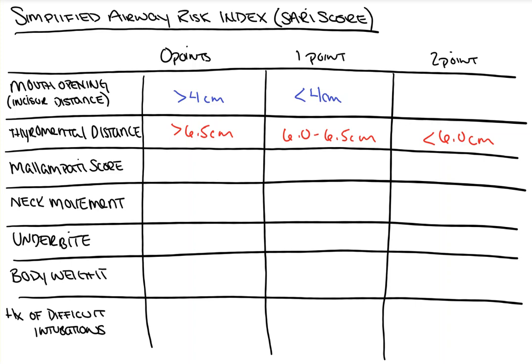Greater than 3 finger-breadths is good, 1 finger-breadth is bad, and 2 is so-so. Next is the Mallampati score. We won't review it here — please see the Mallampati score video for a refresher — but a score of 1 or 2 is worth 0 points, a score of 3 is worth 1 point, and a score of 4 is worth 2 points.